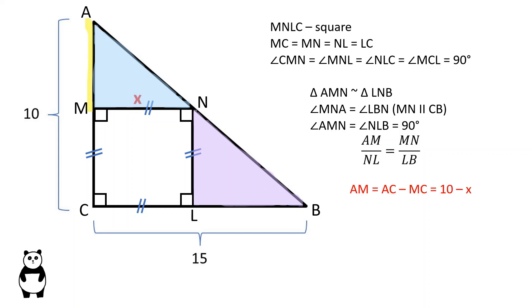AM is equal to AC minus MC, which is 10 minus X. LB is equal to CB minus CL, which is 15 minus X.